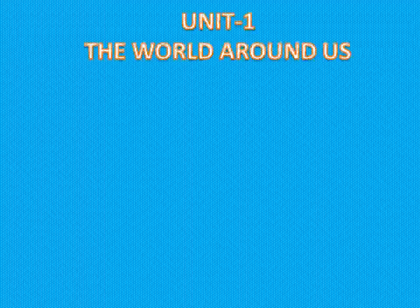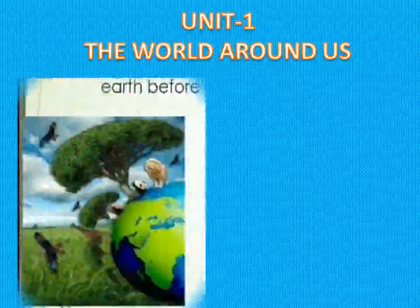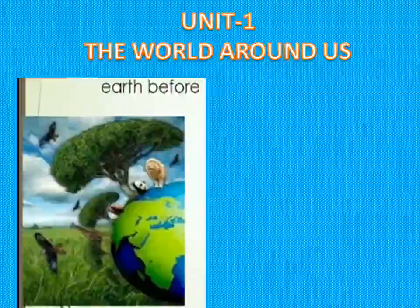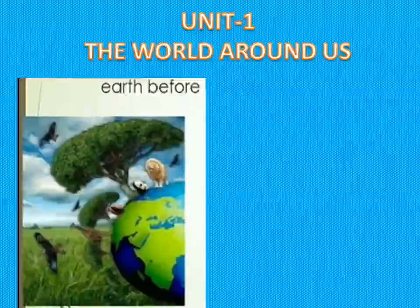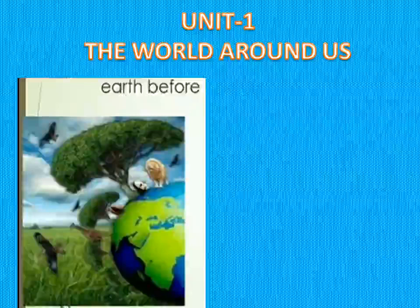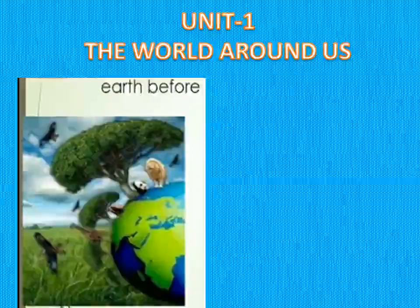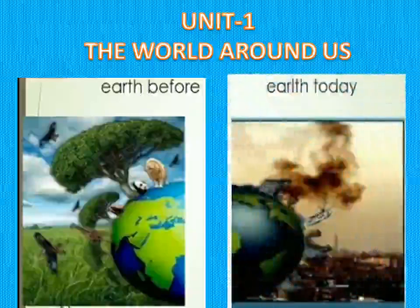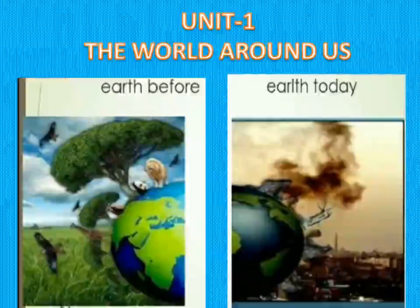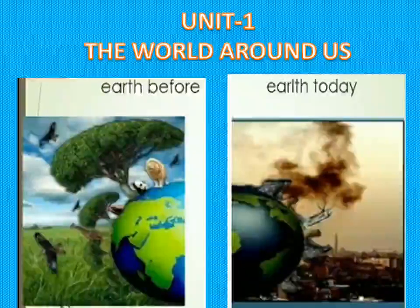Unit 1 — The World Around Us. Dear children, how was the earth many years ago? Long years ago, the earth was green and clean, and it proudly carried and nurtured a number of trees. Before many years ago, the earth was green and clean. After some years, what happened? At present, what is the condition of our earth? Today, because of toxic waste and pollution, the earth is getting damaged. So what should we do to bring back the greenness and cleanness of the earth?